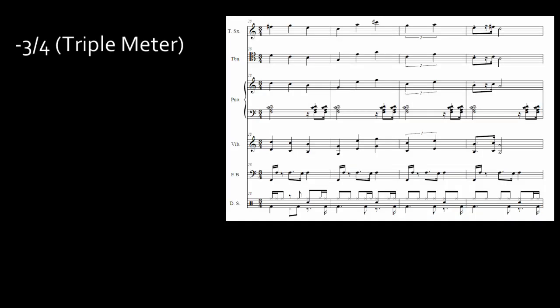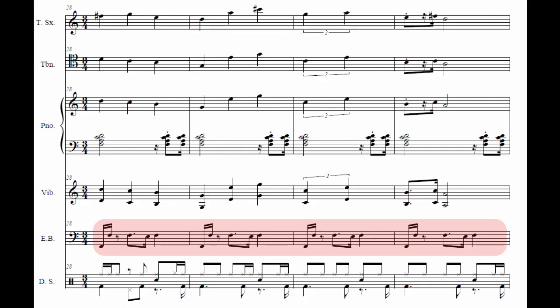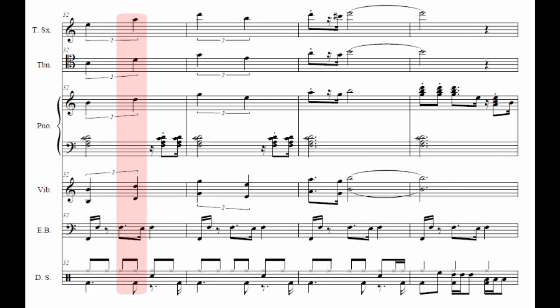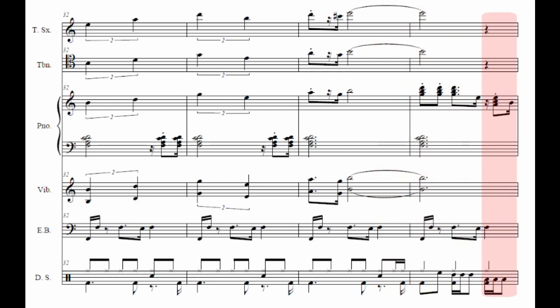This section is in 3/4 time and distinguishes itself by being the only occurrence of triple meter in this piece. The harmony differs between versions. Earlier versions use an F as the root, accompanied by an F6 chord, suggesting the tonality might be F Lydian due to the B natural in the melody. Later versions, however, use a D as the root, suggesting a D Dorian tonality instead.